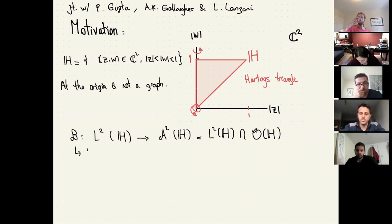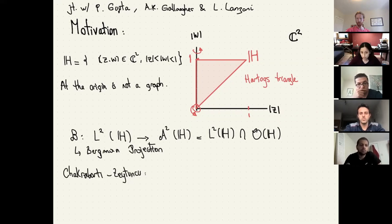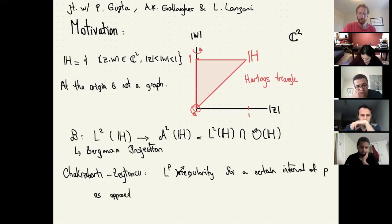When it's not a smooth bounded domain, things are not so simple. Recently, Chakravarty and Sheitungku proved that for the Hartogs Triangle, L^p regularity of the Bergman projection is not given for every p. This is in contrast to the C-infinity smooth boundary case for strongly pseudoconvex domains, where you have L^p regularity for p between one and infinity. For the Hartogs Triangle, even though it's pseudoconvex, you only get regularity for some p or a certain interval.